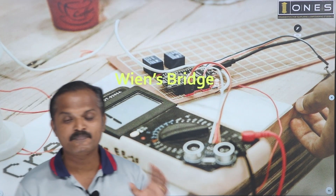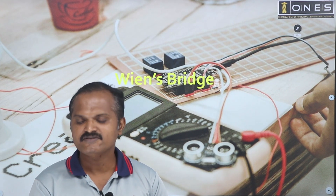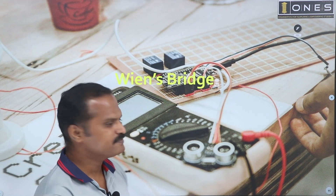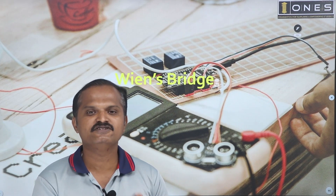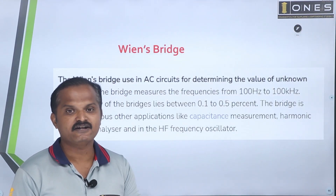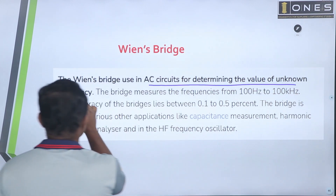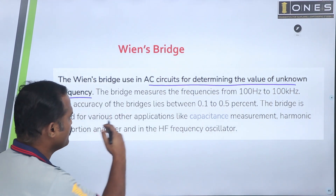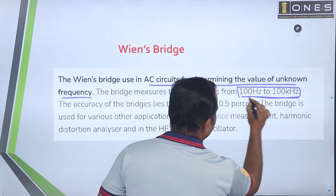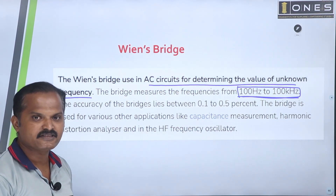This bridge is typically used for frequency measurement — Wein's bridge is dedicated to frequency measurement. Wein's bridge is used for determining the unknown value of frequency in AC circuits. We can use Wein's bridge to measure frequency in the range of 100 hertz to 100 kilohertz.